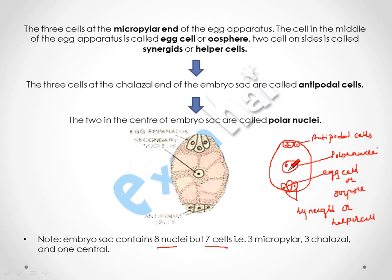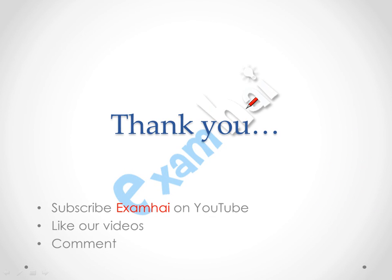To summarize the cell count: 3 cells are present at the micropylar end, 3 cells at the chalazal end, and 1 central cell — giving a total of 7 cells. If you like this video, subscribe to Exam Hai on YouTube, like the videos and comment.